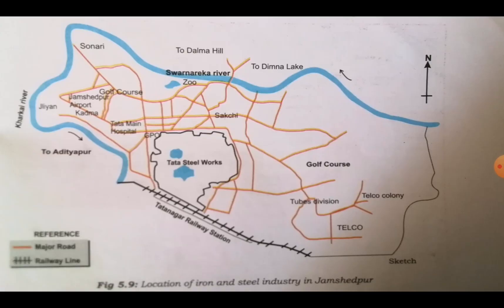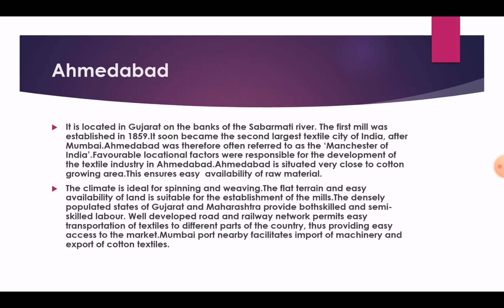Here is the location of the iron and steel industry in Jamshedpur. Ahmedabad is located in Gujarat on the banks of the Sabarmati River. The first mill was established in 1859 and it soon became the second largest textile city of India after Mumbai.